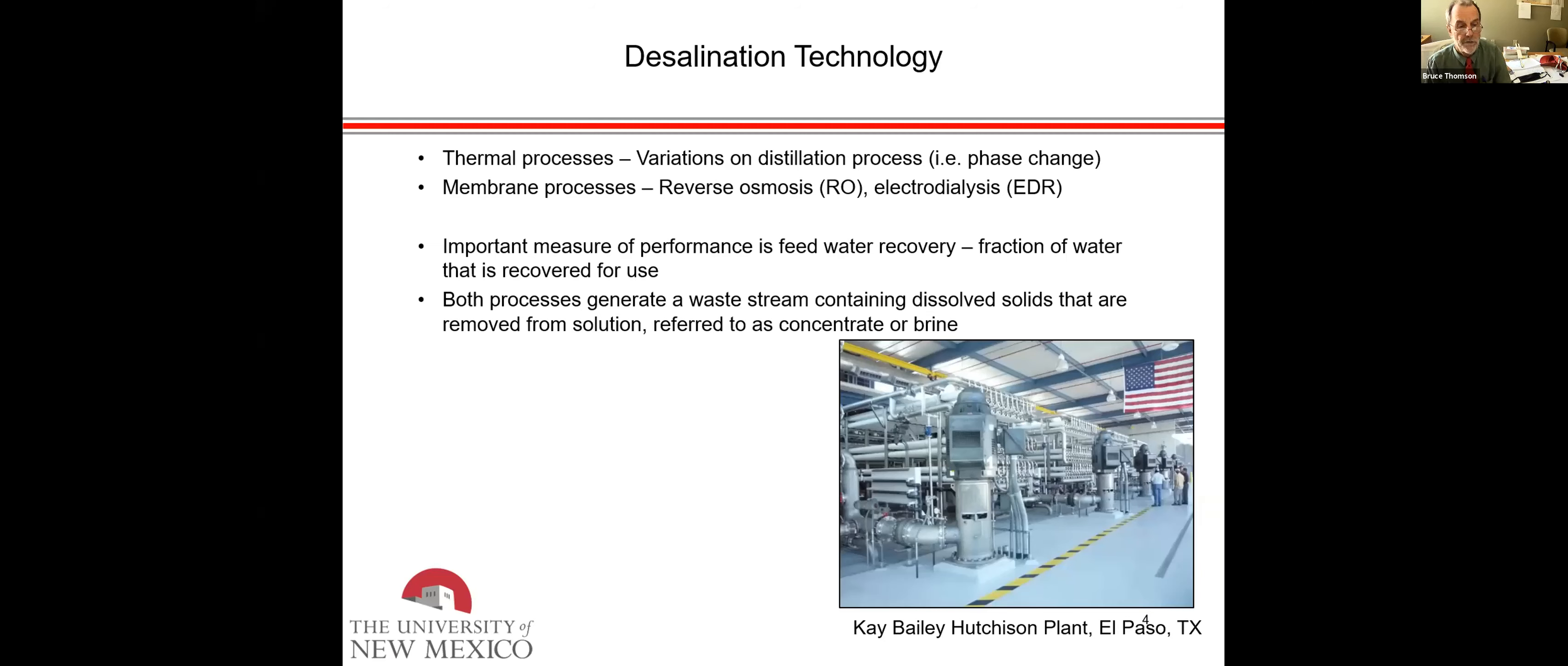Here is a picture of the Kay Bailey Hutchison plant in El Paso, Texas. You can see it's got row after row after row of these tubes. I think they're four inches in diameter, and they have reverse osmosis membranes in them. This plant treats water with a salinity of about 3,000 milligrams per liter, about one-tenth the salinity of seawater, and they get about 75% recovery. So they feed in 100 gallons, recover 75 gallons of deionized water, and they have about 25 gallons of concentrate that they have to dispose of.